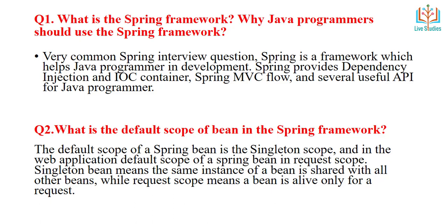Next question: What is the default scope of a bean in the Spring framework? The default scope of a Spring bean is singleton scope. In a web application, the default scope of a Spring bean is request scope. Singleton bean means the same instance of a bean is shared with all other beans, while request scope means a bean lives only for a single request.